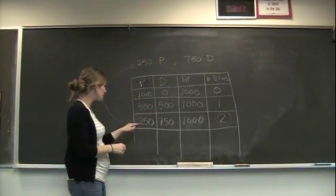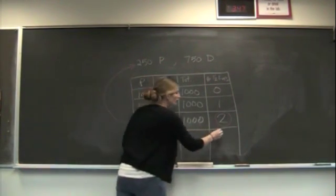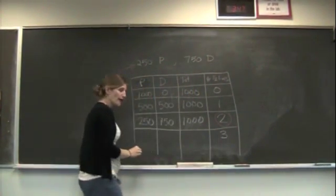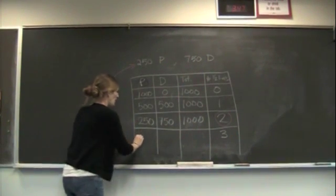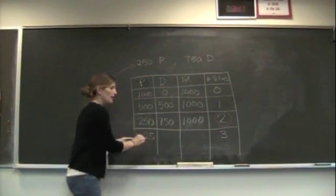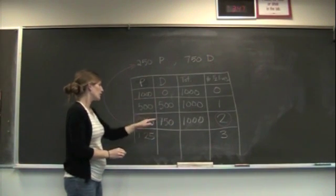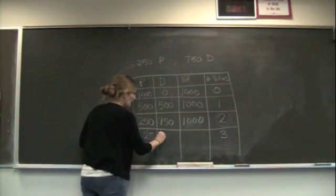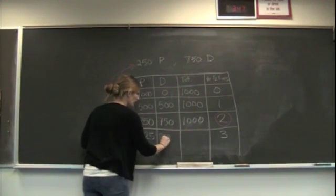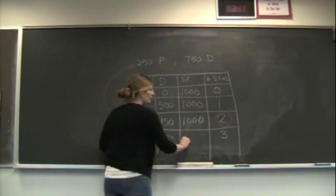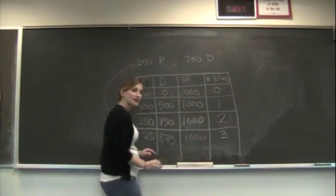This is going to continue. If we want to just go one more step, after three half-lives, we'll have 125 of the parent left. And we're going to add 125 to this side. So we have 875 for a total of 1,000. And that's going to continue.